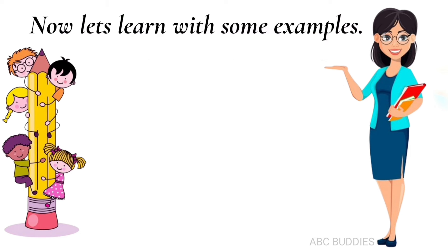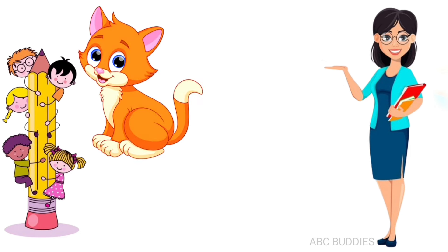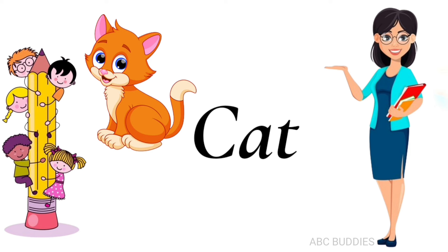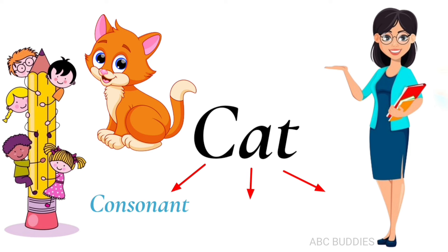Now let's learn with some examples. This is a cat. C, A, T — Cat. Here, C is a consonant, A is a vowel, and T is a consonant.